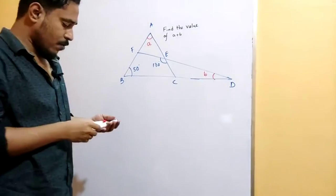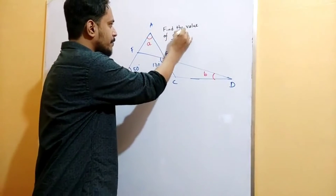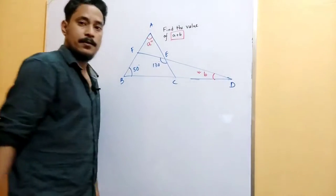In this given question, we have to find the value of A plus B. This one is angle A and this one is angle B.